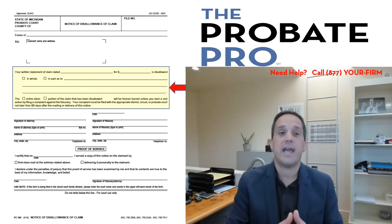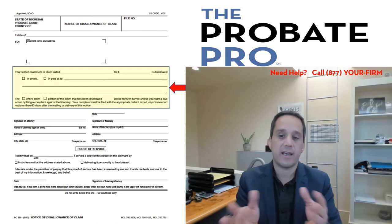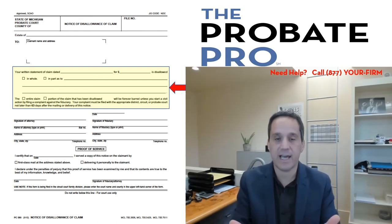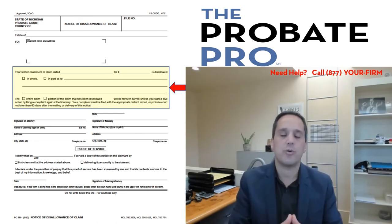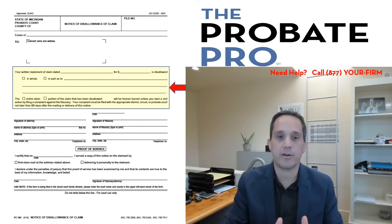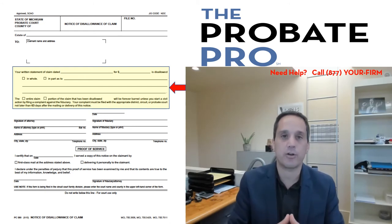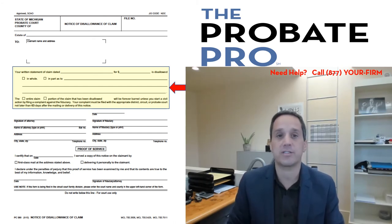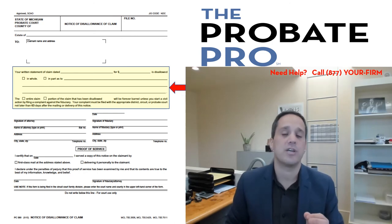A personal representative can disallow a claim and then allow it, and also can allow a claim and then disallow it. The burden is really on the creditor, and the clock is on the creditor to perfect their claim within the statutory time frames — what we call the statute of limitations. Adherence to Michigan's court rule and statute is really critical to the creditor claim.